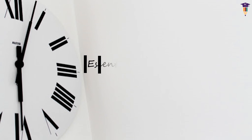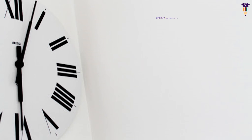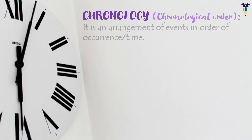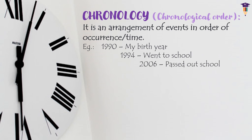Let us have a quick look at a few essential terms in history. Chronology or chronological order: it is an arrangement of events in order of occurrence or time. Example: 1990 - my birth year; 1994 - went to school; 2006 - passed out of school, and so on.